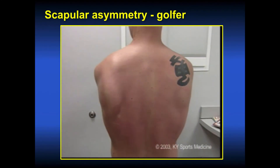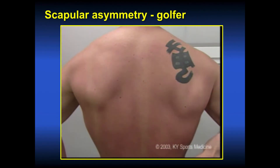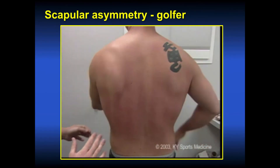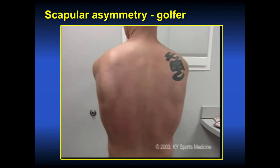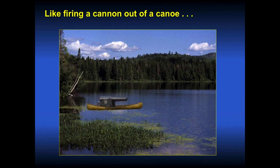One must address scapular stabilization with specific rehab exercises — elbows in your back pocket and shrugs — and then his shoulder pain will improve. This does not need glenohumeral treatment, whether injections or surgery. Get the scapula in the right place and the shoulder pain will go away. Remember to examine the scapula. If it is in the wrong position, it is like firing a cannon out of a canoe, and normal shoulder function will not occur until you stabilize the scapula — put the cannon back on dry ground. Thank you very much.